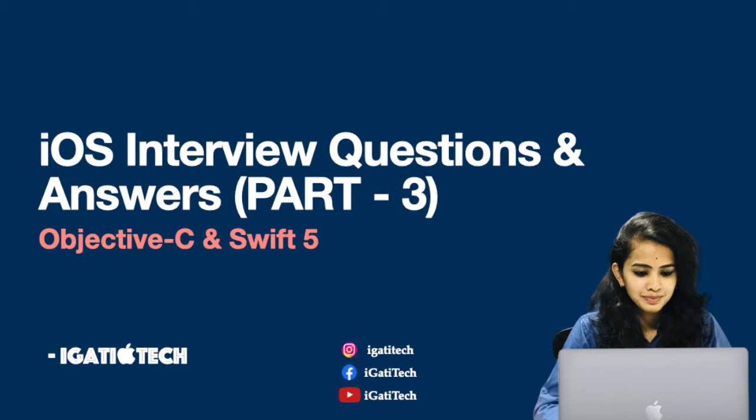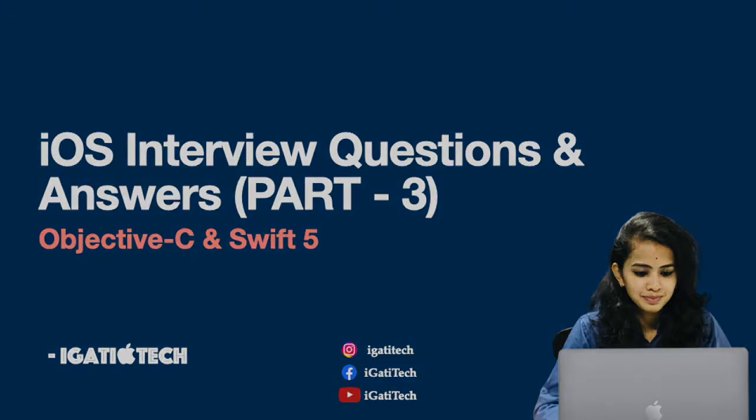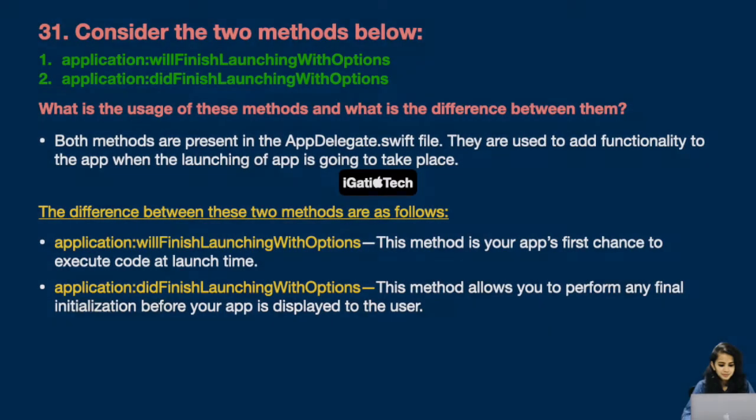Question number 31: consider the two methods below. The first one is applicationWillFinishLaunching(withOptions:) and the second one is applicationDidFinishLaunching(withOptions:). What is the usage of these methods and what is the difference between them?